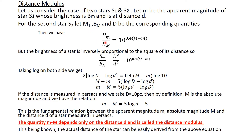We use the relation derived in an earlier class — you can find that video via the i-button — connecting brightness of a star and its apparent magnitude. We get the relation: B_m divided by B_M equals 10 raised to the power 0.4(m − M).